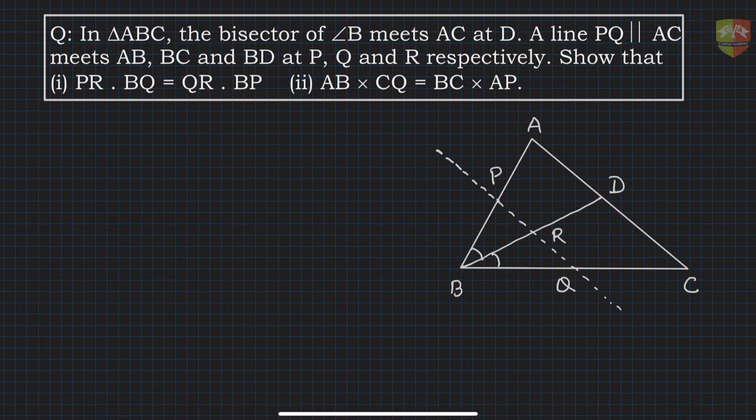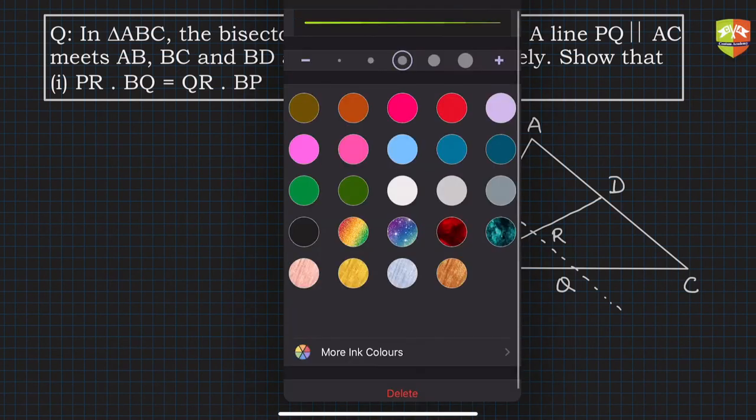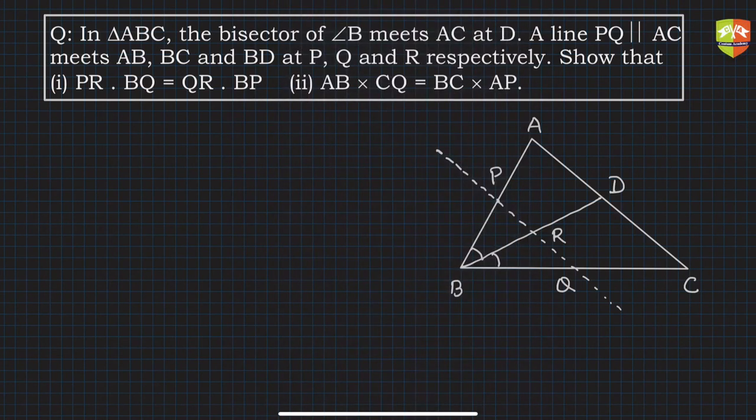Hello and welcome to another problem solving session. In this session, we are going to deal with a question about triangle ABC where the bisector of angle B meets AC at D.